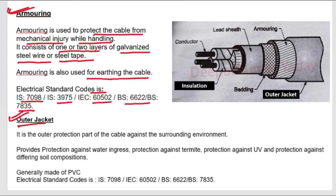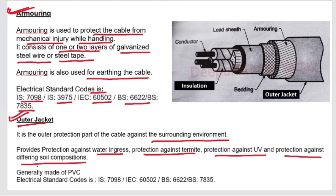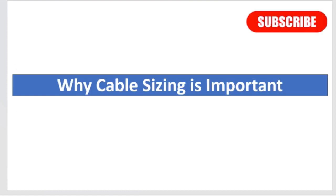The last protective layer is the outer jacket. It is the outermost protection against the surrounding environment, providing protection against water ingress, termites, UV radiation, and differing soil composition. It is generally made of PVC (polyvinyl chloride). Electrical standard codes are IS 7098, IEC 60502, BS 6622, and BS 7835. This brings us to the question: why is cable size important?